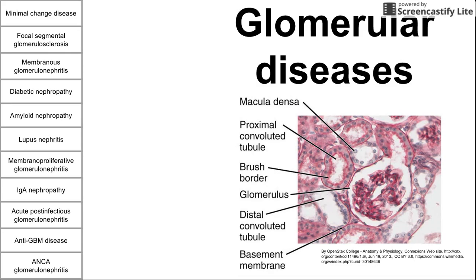This is a normal histological section of the cortex of the kidney, where you can see a normal glomerulus, a normal proximal convoluted tubule, a normal distal tubule — this is what the normal features should look like. This can serve as a reference for the histology images we're going to see as we talk about these 11 diseases.